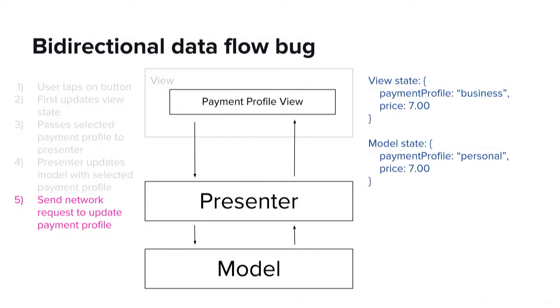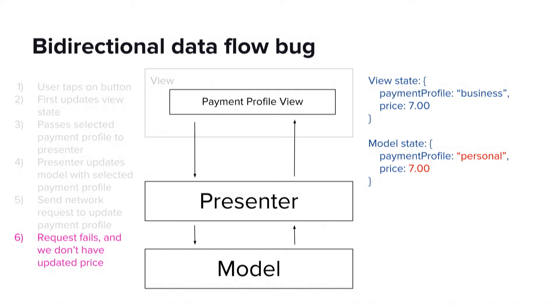Now let's revisit the step where we've already updated the view state to business and we're in the process of updating the model state. At this point, our application makes a network request to update the payment profile, and it also attempts to refetch the price. But what happens if our network request fails? At this point, we have two problems. Our model and our view are out of sync — the view is showing the user that this is a business ride, but our model thinks it's a personal ride. The other issue is that we're now showing an incorrect price to the passenger. The passenger thinks that this is a business ride that costs $7 when it actually should cost $6. We've run into this bug because we've applied a partially successful update to the view — our application has optimistically updated one part of the view without a guarantee that it can successfully update the rest of the view.